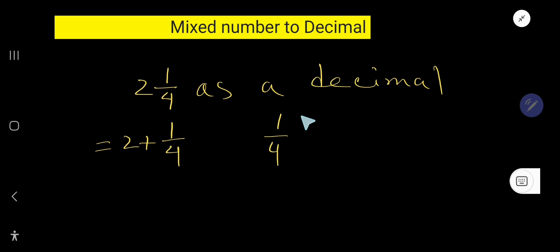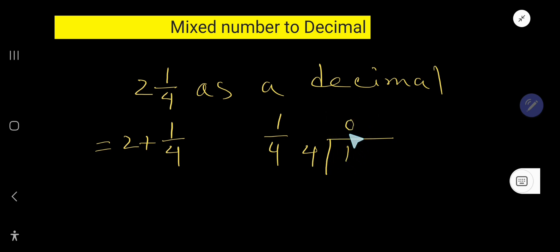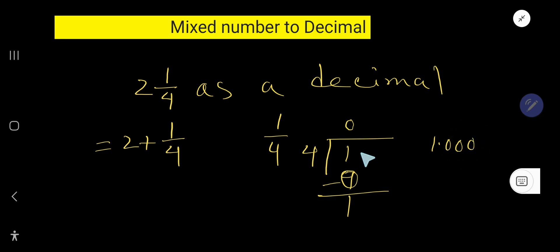To convert this fraction to decimal, you need to divide the numerator by the denominator. Four goes into one — since one is less than four — zero times. Zero times four is zero. If you subtract, you get one. You can rewrite any whole number as a decimal by placing a decimal point after it and adding zeros. Bring down the first zero, and the decimal point goes directly to the quotient side.